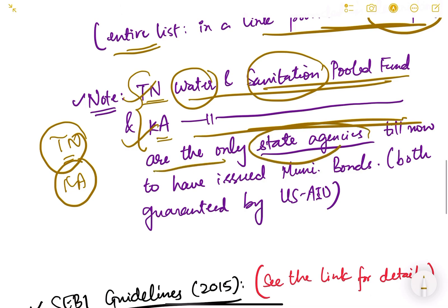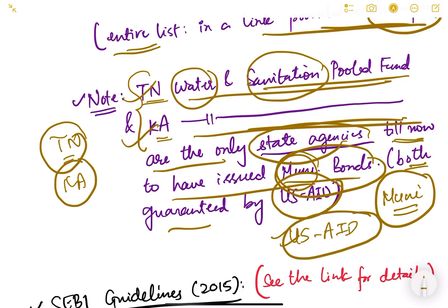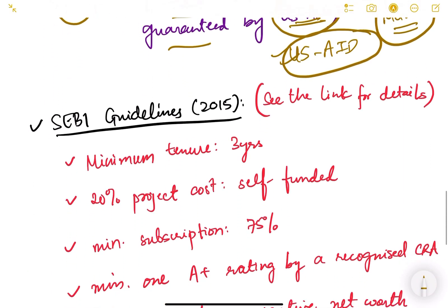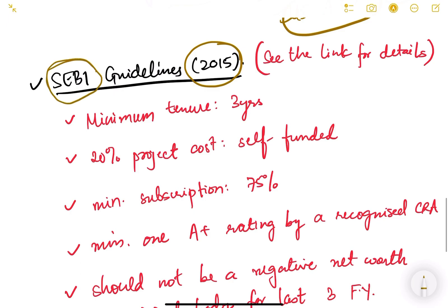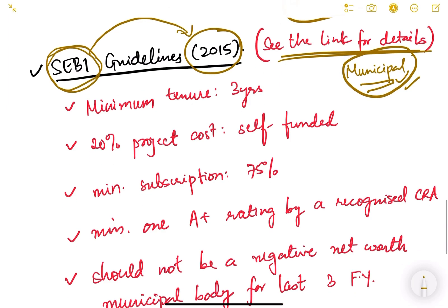Tamil Nadu and Karnataka are the only two state agencies so far to have issued municipal bonds. Municipal bonds are also known as muni bonds — muni being a short form for municipality. Both of these state agency bonds are guaranteed by USAID. Since they were issued by the state government, the state is naturally obligated to pay, but USAID has additionally guaranteed these bonds. In 2015, SEBI issued guidelines for the issuance of municipal bonds — prior to 2015 there were no strict specific guidelines.